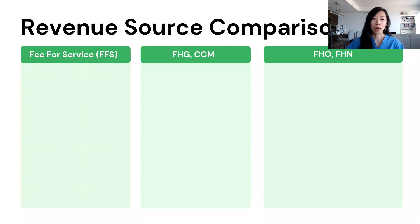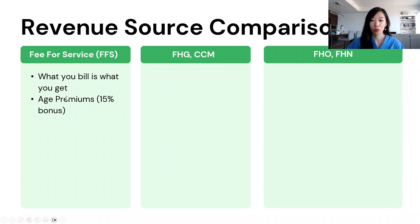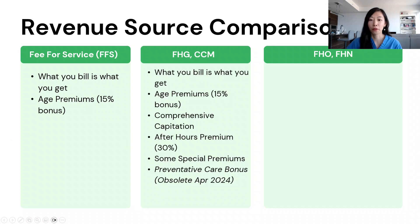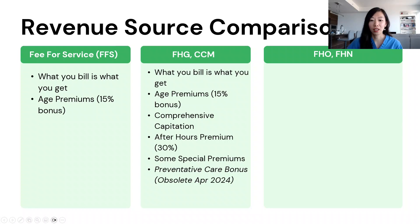The RA is useful for telling you the breakdown of where your revenue as a doctor comes from. Having worked in all three models, each one is kind of like a stepping stone to understanding the other. If you bill fee-for-service, it's very simple — what you bill is what you get. You can also get a bonus for seeing patients who are older than 65. If you're working in a family health group (FHG) or comprehensive care model (CCM), you get what fee-for-service doctors get, plus comprehensive capitation, a bonus for working after hours and weekends, special premiums for specific populations, and a preventative care bonus that will become obsolete in 2024.